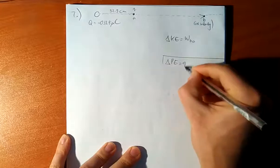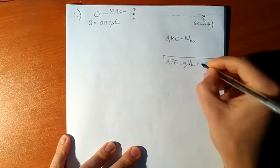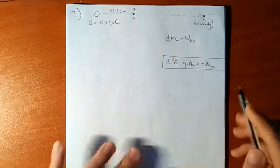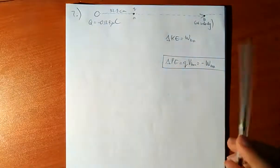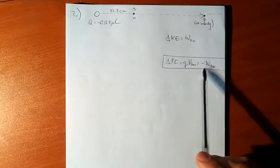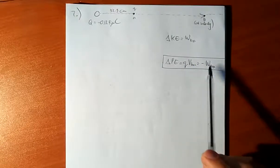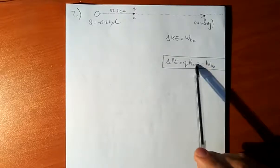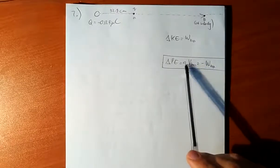Change in electric potential energy is Q(VB - VA), which is equal to minus the work done. So the change of kinetic energy will be equal to work done, and that is equal to that term.